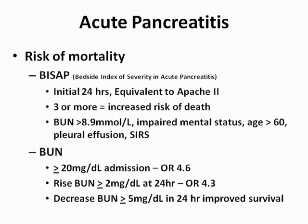Three or more BISAP criteria are associated with increased risk of death. These include a BUN of over 8.9, impaired mental status, age over 60, pleural effusion, and SIRS. A simpler approach is to just follow BUN: a BUN of over 20 at admission was associated with increased risk of mortality, and a rise in BUN of greater than 2 mg per deciliter at 24 hours was also associated with increased mortality.